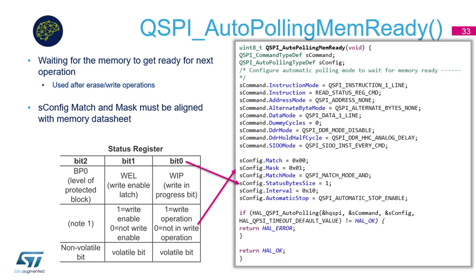The memory contains a status register with a few indicators. The important flag for us is the Write In Progress bit — it indicates whether a write or erase operation is still ongoing or finished. For this functionality we can use auto polling mode, which automatically uses the Read Status Register command at defined intervals and waits until mask and match conditions are fulfilled. The match and mask must be aligned with the memory datasheet.